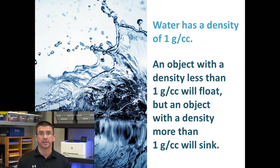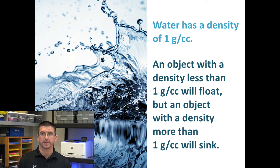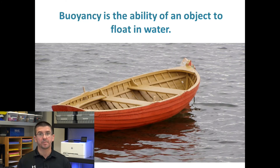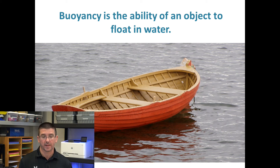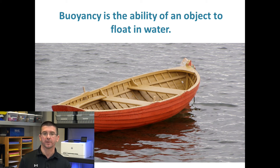Something with less density than water — anything less than 1 gram per cubic centimeter — would float because it's less dense, so it would rise to the top. This idea of being able to float on water, or float in any particular liquid, is referred to as buoyancy. That's a property that is very important for something like a boat, or anything that we would want to stay on the surface of the water.